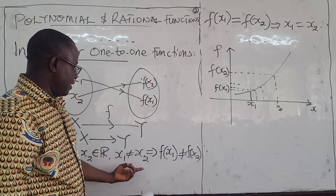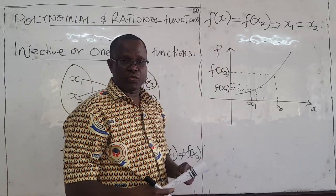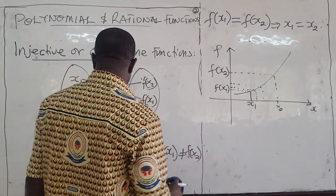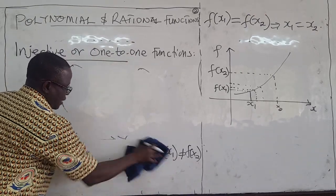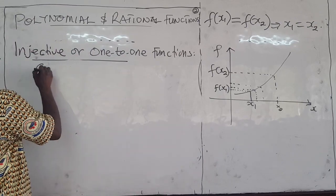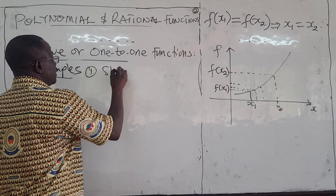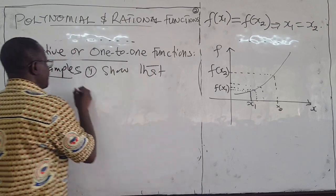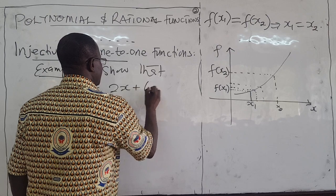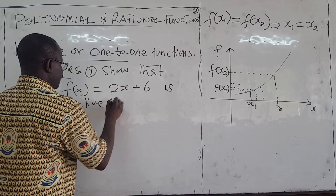You can use either definition of the one-to-one function to determine, given a function, whether it is one-to-one or not. Let's look at a few examples. Example one: show that f(x) = 2x + 6 is injective, or one-to-one.